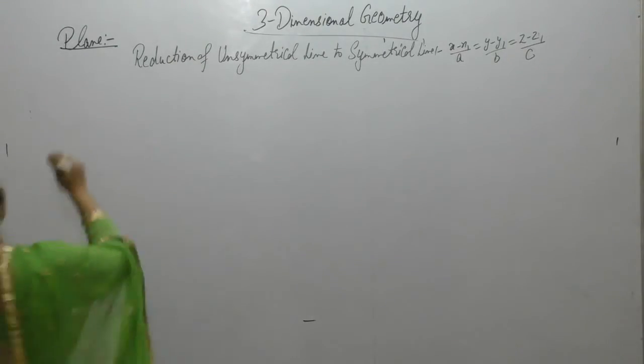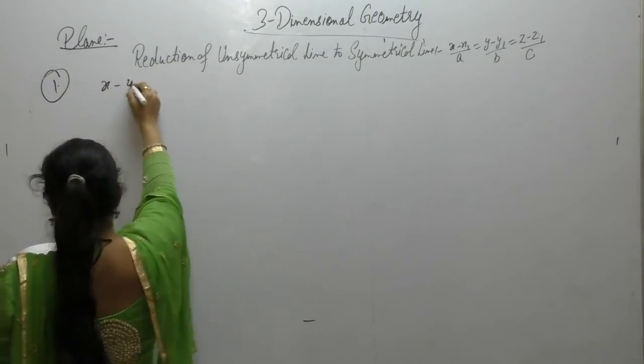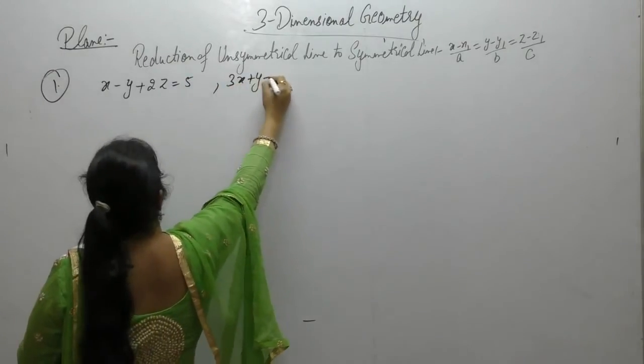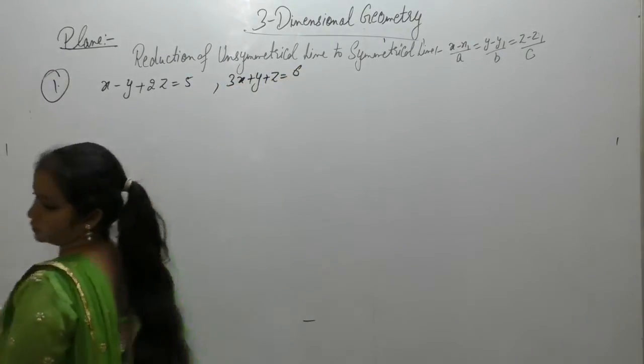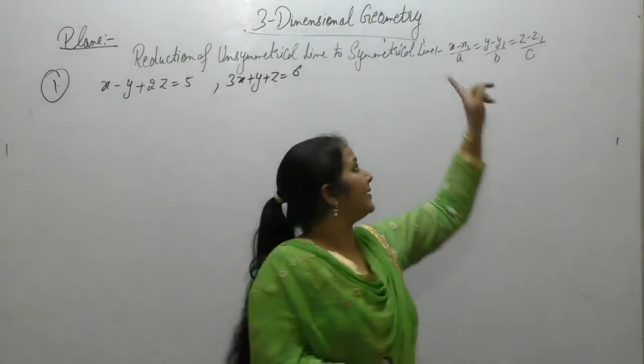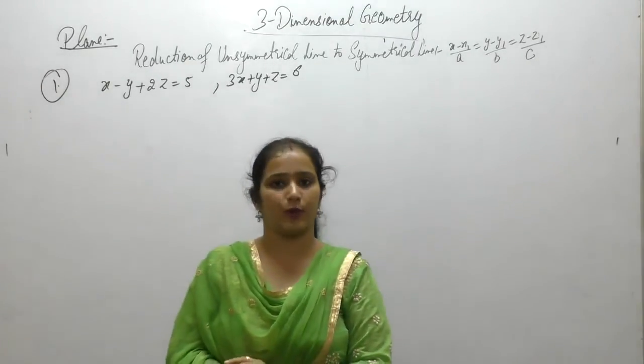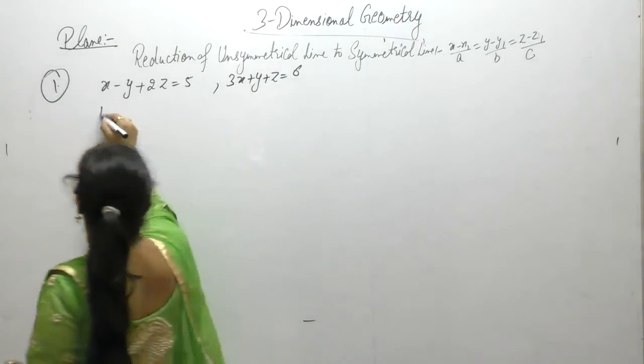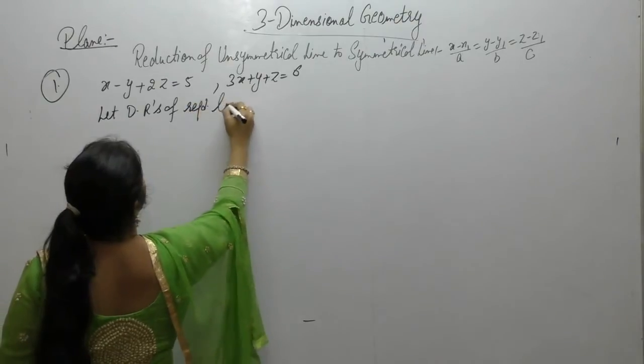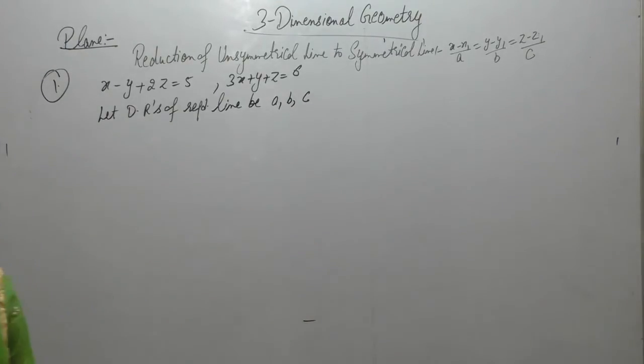Reduce in the symmetrical form, the equation of line x minus y plus 2z equals 5, 3x plus y plus z is equal to 6. Next, हमें line की equation निकान ली है, हमें क्यांते ही उसके? Direction ratios first और line किसमें से pass करती है, वो point चलिए. Let direction ratios of required line be A, B and C.